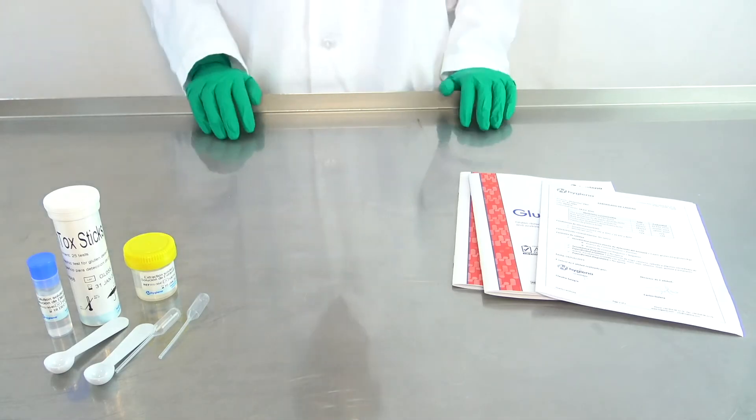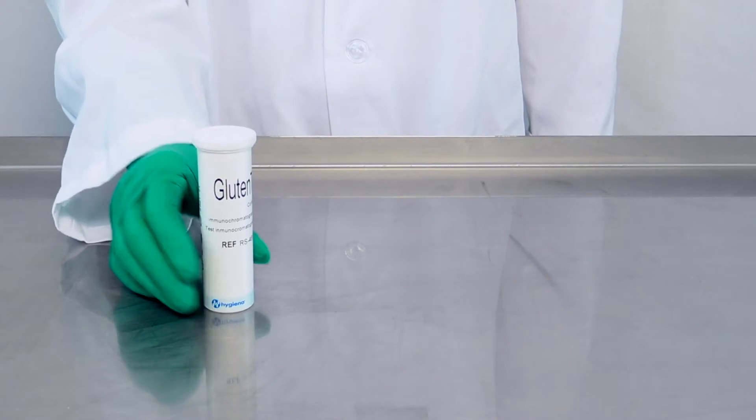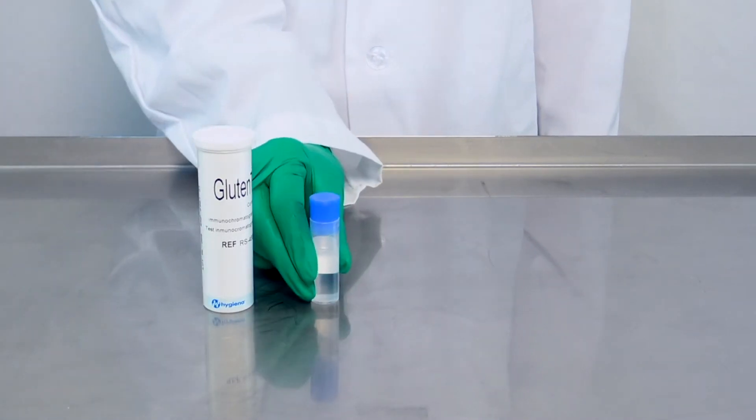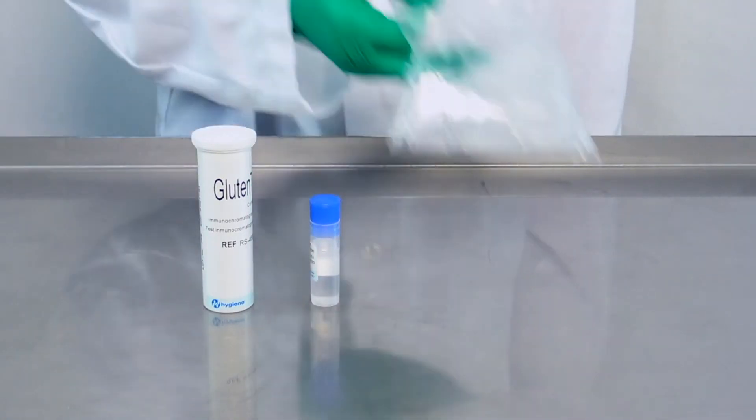Let's get started! Surface Analysis. For this testing process, you will only need the gluten talk sticks, dilution solution with the blue cap, and a plastic pipette.